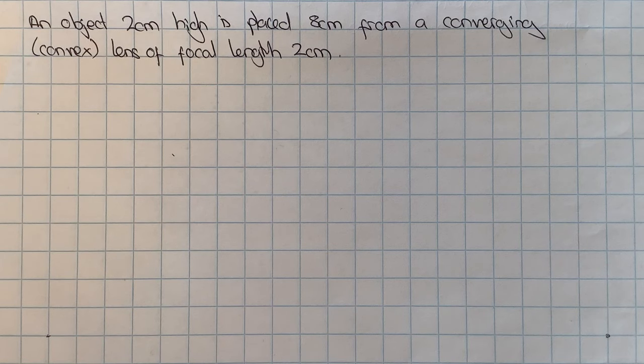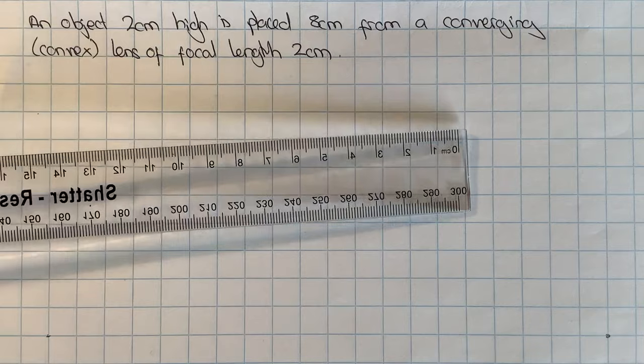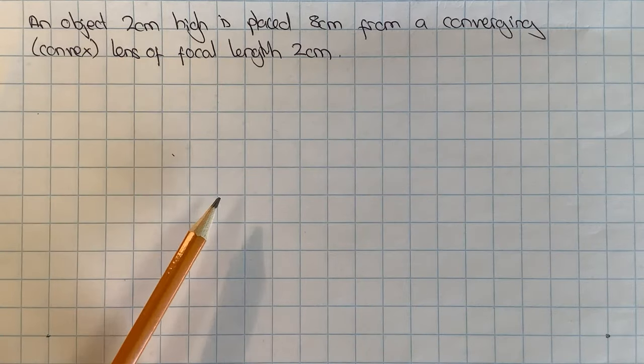In this video I'm going to look at how you can draw a ray diagram for a converging or convex lens. For this you'll need some squared paper or graph paper, a ruler, and a pencil.